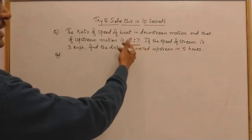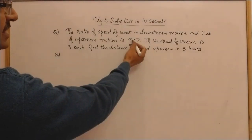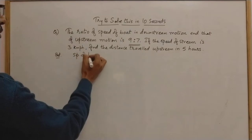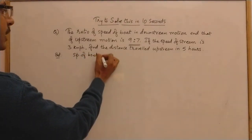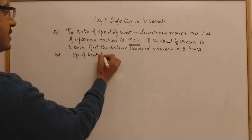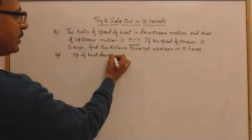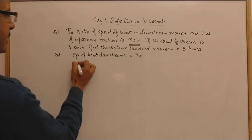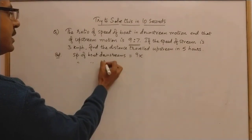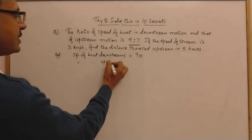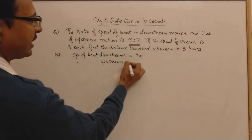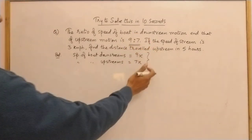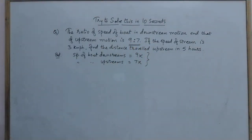Whenever we are given the ratio, we assume them by suffixing an x. So speed of boat downstream is assumed as 9x, and speed of boat upstream is assumed as 7x. These are the two values assumed based on the given ratio.